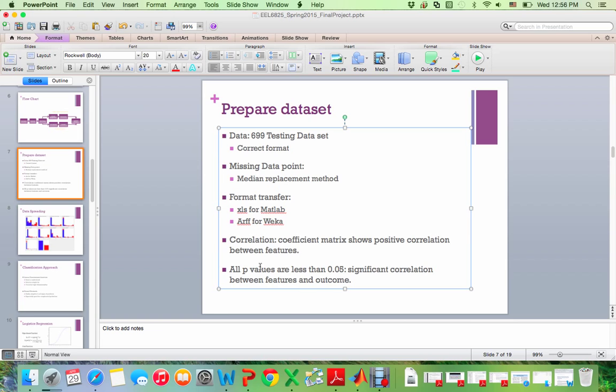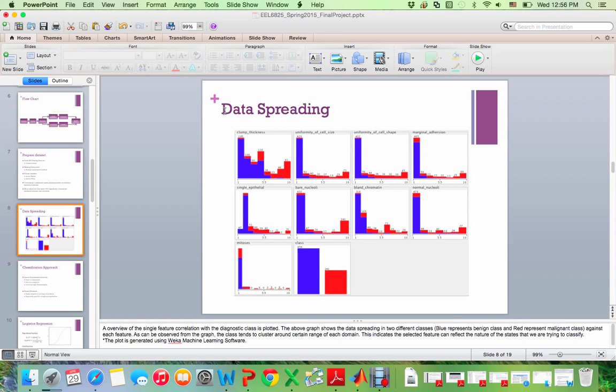And then we look at the p values for all different features to see if there's a significant correlation between the features and outcome. And there are less than 0.05, actually they're really close to zero. So each one provides some unique information to give us the conclusion. So data spreading is showing here. And you can see that they have a nice class separation for each features dividing the classes. The class for the blue one is representing the benign tumor cells and the red one is representing the malignant.